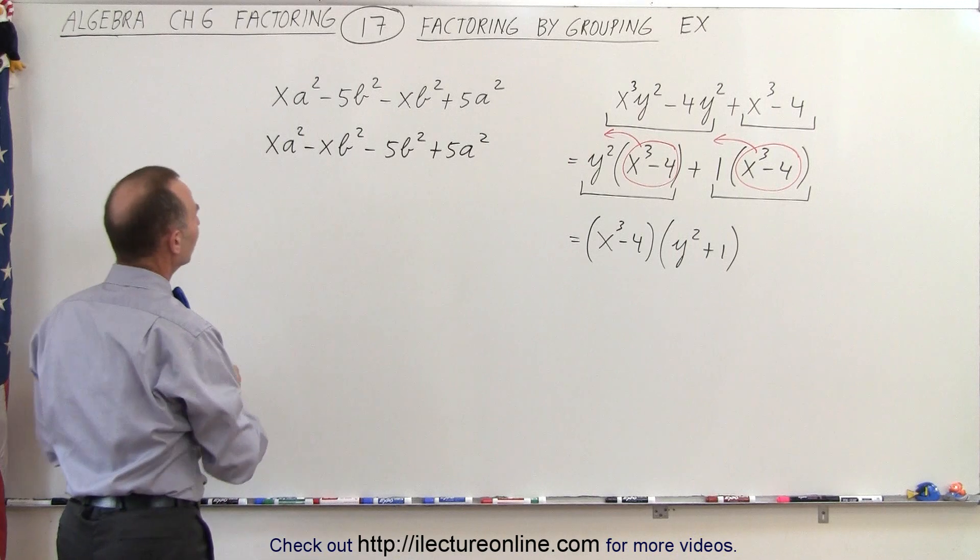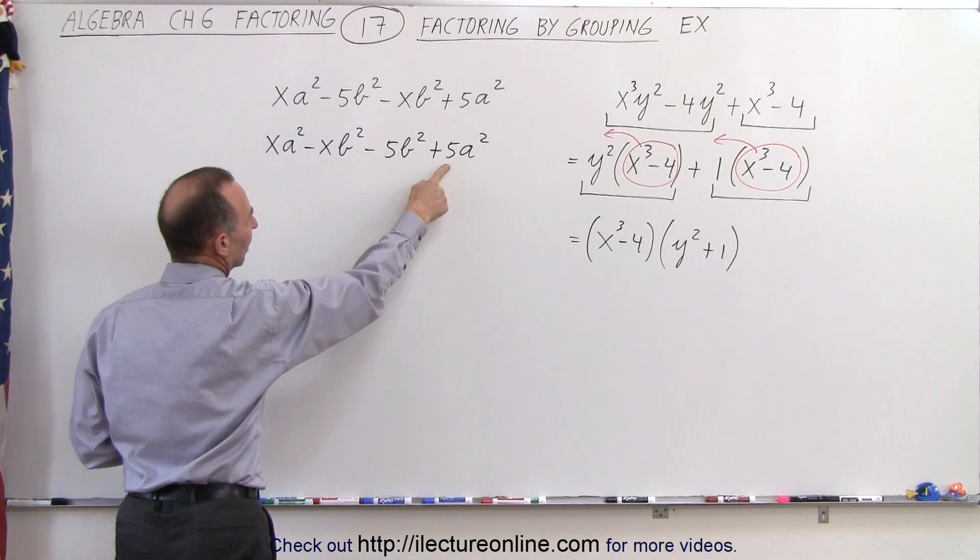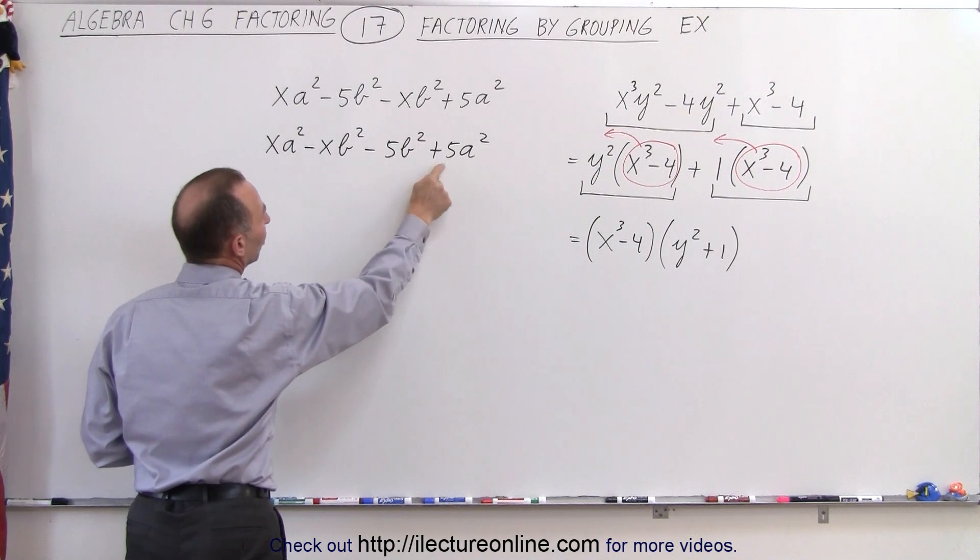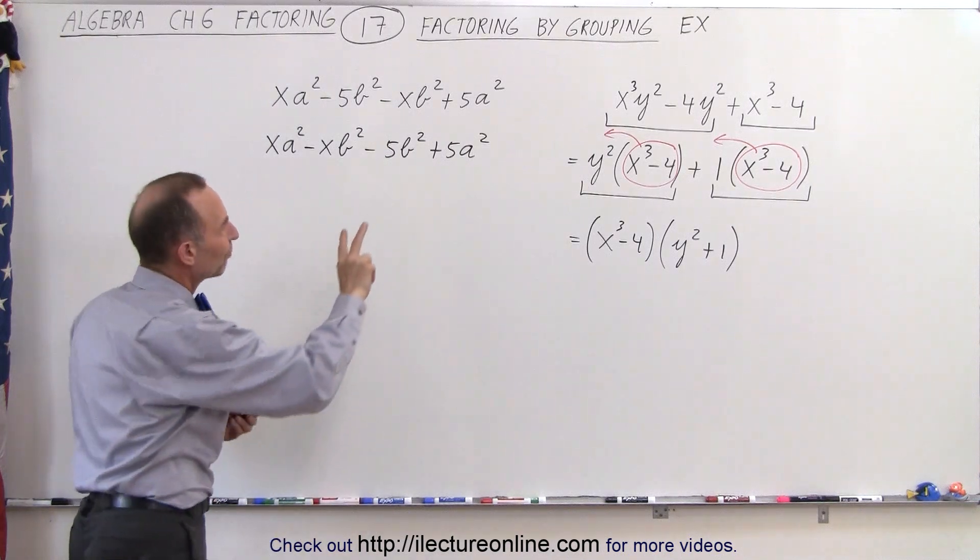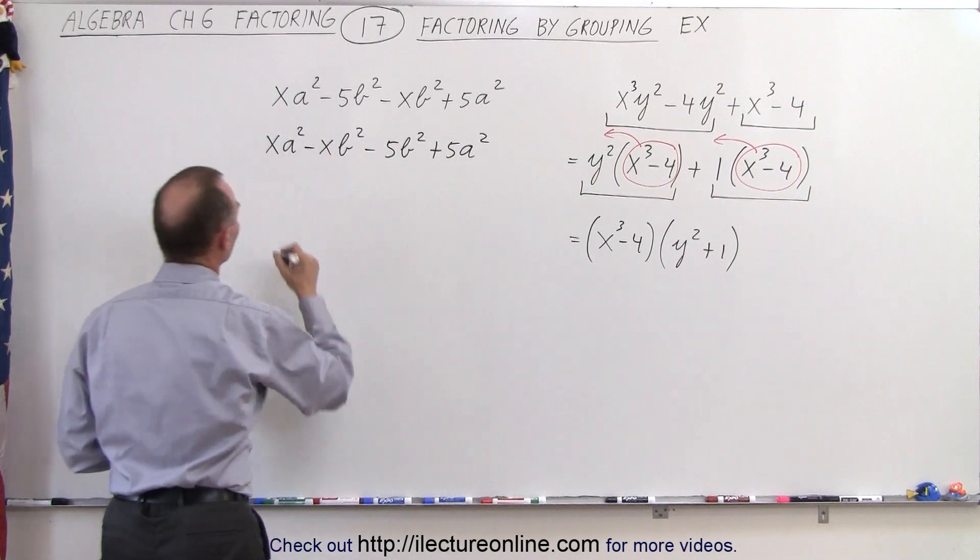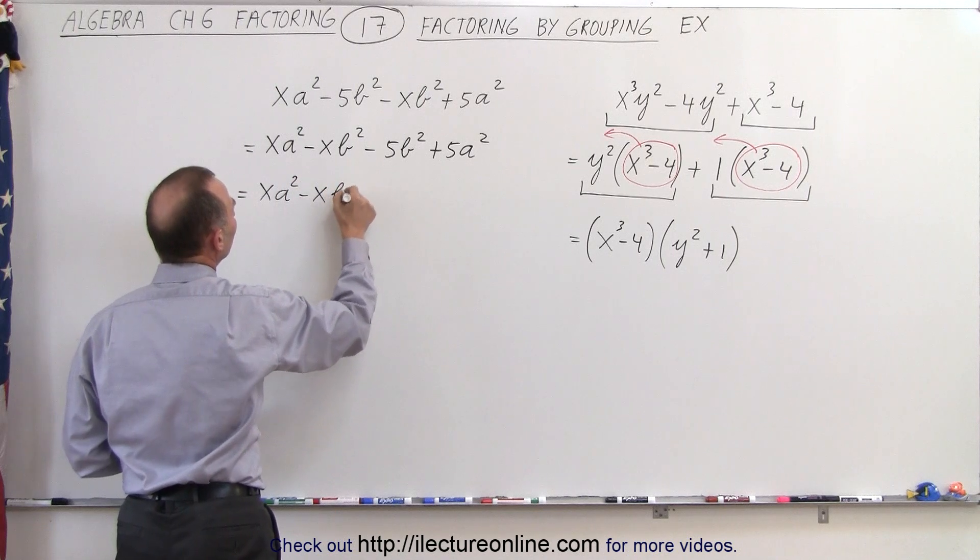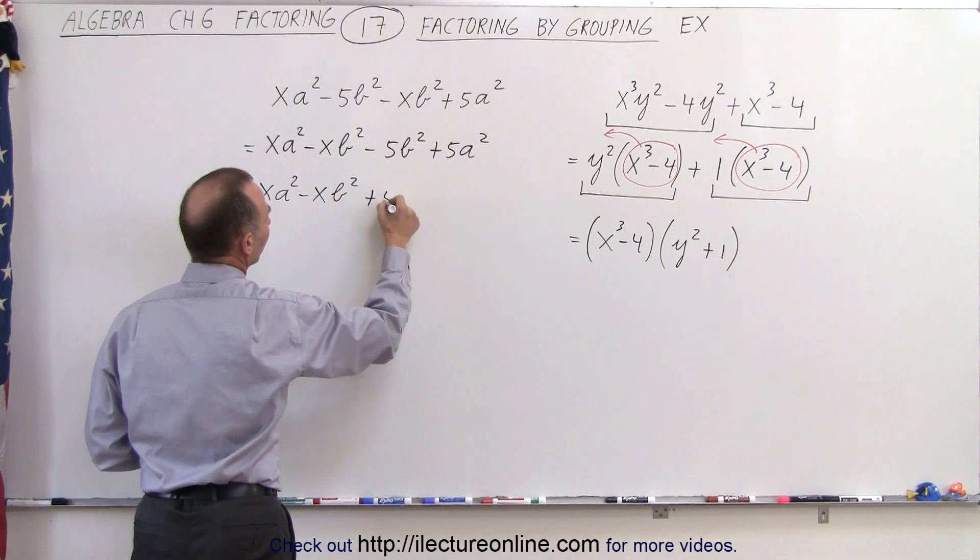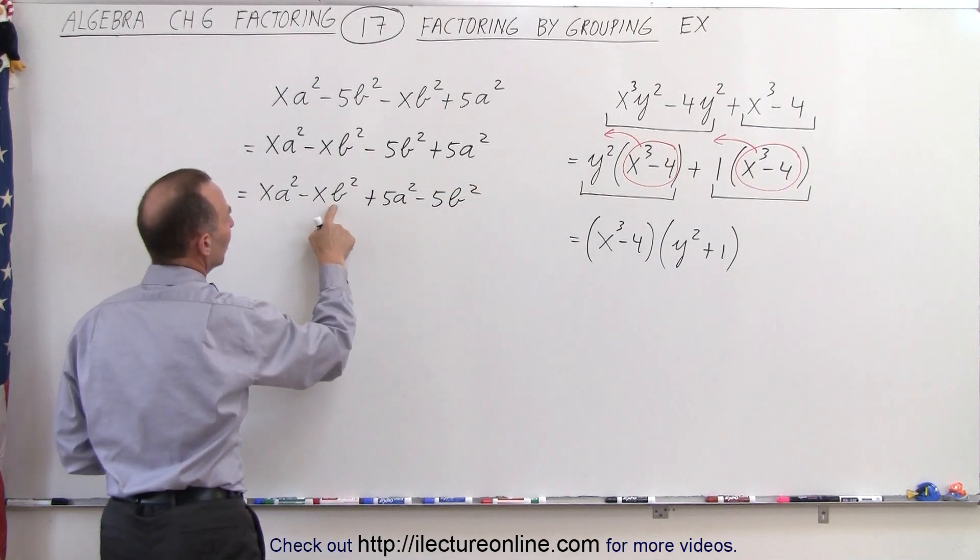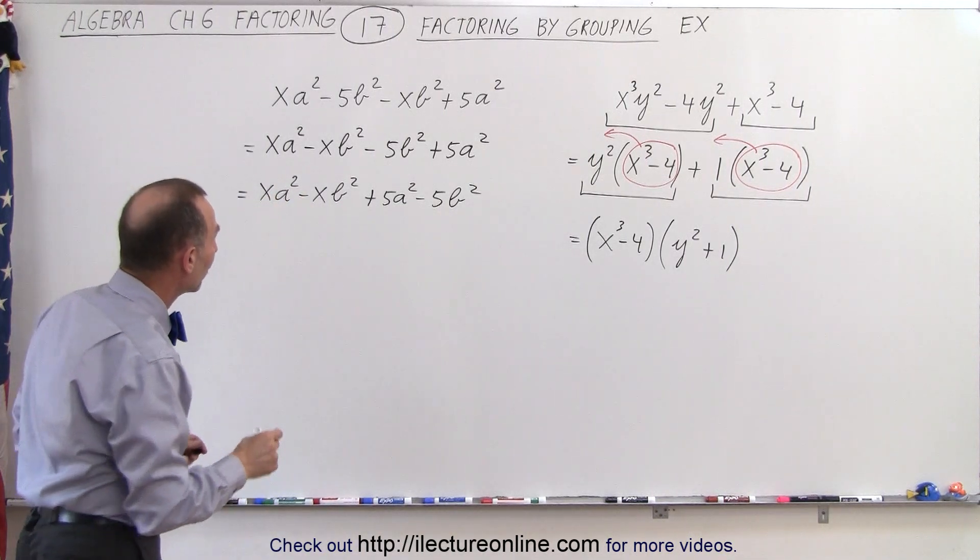Now the assumption is that we're going to factor out an x from here and maybe a five from there, but notice we have an a-square minus b-square and have a minus b-square plus a-square. So I'm going to reverse the order of these terms so that they're lined up the same. This can now be written as x a-square minus x b-square, and bring this as the third term, plus five a-square minus five b-square.